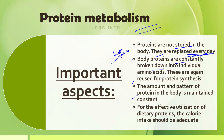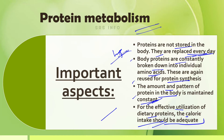Body proteins are constantly broken down into individual amino acids, which are then reused for protein synthesis and body maintenance. The amount and pattern of protein in the body is maintained constant. For the effective utilization of dietary proteins, calorie intake should also be adequate so that protein metabolism can take place properly.